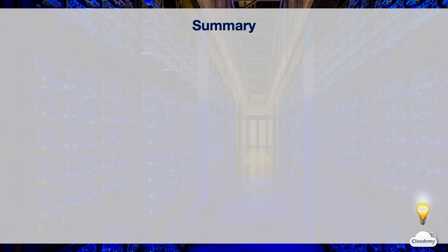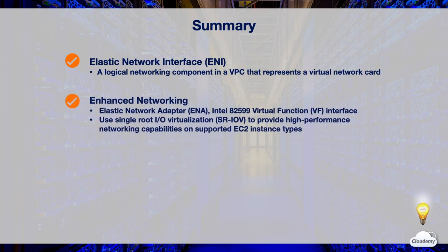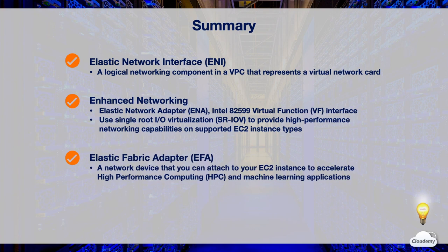In this episode, we've learned about elastic network components on AWS. ENI is a logical networking component that represents a virtual network card in a VPC. You can create and configure ENIs and attach them to EC2 instances in your VPC. ENA is one of the mechanisms that Enhanced Networking offers, using SR-IOV to provide high-performance networking for supported instances. Enhanced Networking offers ENA and Intel VF interface. EFA is a network device that you can attach to your instance to accelerate HPC and machine learning applications.